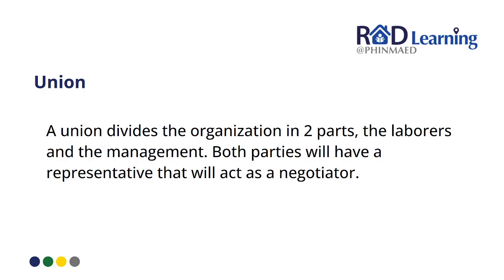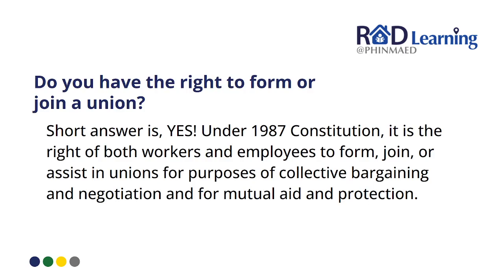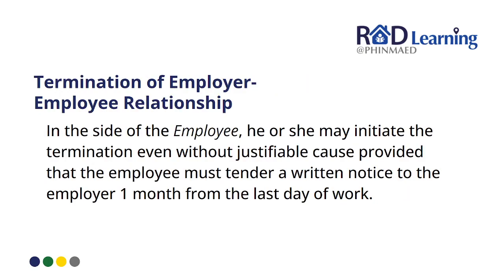A union divides the organization into two parts: the laborers and the management. Both parties will have a representative that will act as a negotiator. Under the 1987 Constitution, it is the right of both workers and employees to form, join, or assist in unions for purposes of collective bargaining and negotiation, or for mutual aid and protection. If you are terminated because you joined a union, it is unconstitutional and you can sue your employer for that.